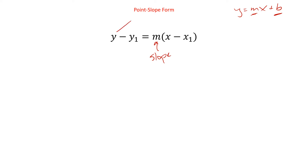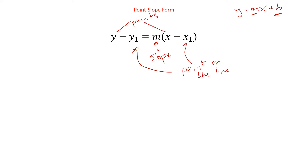x and y are still the variables — they're the points on the line. Now instead of b, the y-intercept, which is a very specific starting point, we have a more general starting point, which is x1, y1. It's a point on the line, and it does not matter which point it is — any point on the line will work. Whereas if x was 0 and y was b, that's what we'd get for slope-intercept form. They both have an m for slope; in this one we have x1 and y1 as opposed to just b.